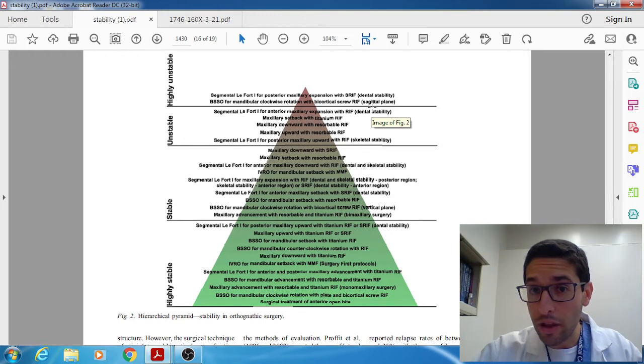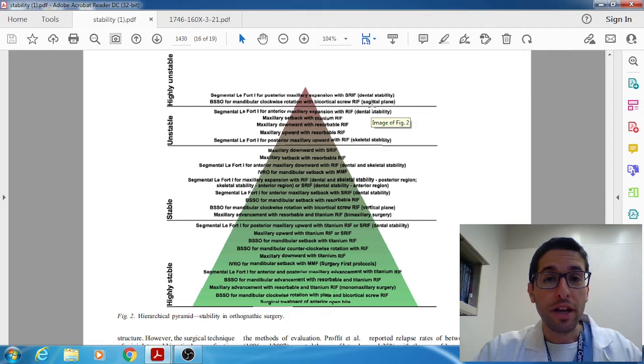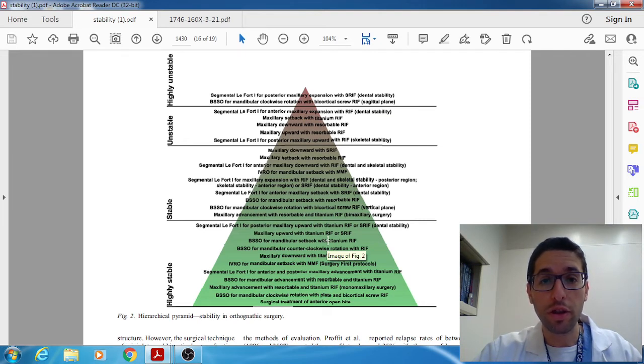And I don't I know there are certain parts of the country that still like it but there's been a lot of studies that show that with that lag screw technique you're torquing the condyle and that's what causes a lot of the relapse. But in short this new 2019 meta-analysis shows that a lot of the problematic procedures mentioned in the Profitt and Turvey hierarchy have been resolved with better fixation and better techniques and to this day the only truly problematic procedures would be widening of the maxilla or using resorbable plates or doing a mandibular rotation with lag screws but pretty much everything else is in the stable category and I'll leave you with that and I'll see you guys next time.